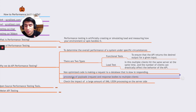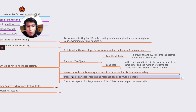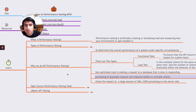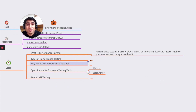We also want to check how the processing of payloads happens — for example, if there is a heavy JSON response or request, such as creating thousands of users or getting thousands of repos. We want to check the impact of large amounts of JSON or XML data being sent and processed. These are the things we generally do in performance testing of an API.